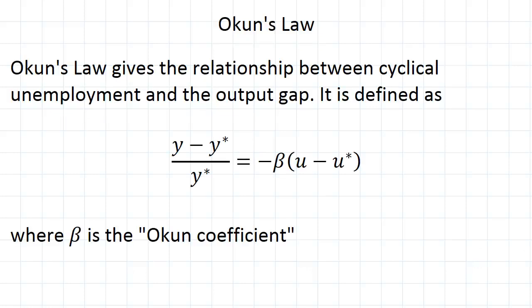So Okun's Law is given by this equation here. Now I've said that we're going to look at the relationship between unemployment and GDP. Specifically, we'll be looking at it through the relationship between cyclical unemployment and the output gap. So let's just break this equation down into these components. On the left hand side we've got the output gap. More specifically, the numerator here is the actual output gap. Then we divide by potential GDP so that we have the gap as a fraction of potential GDP.